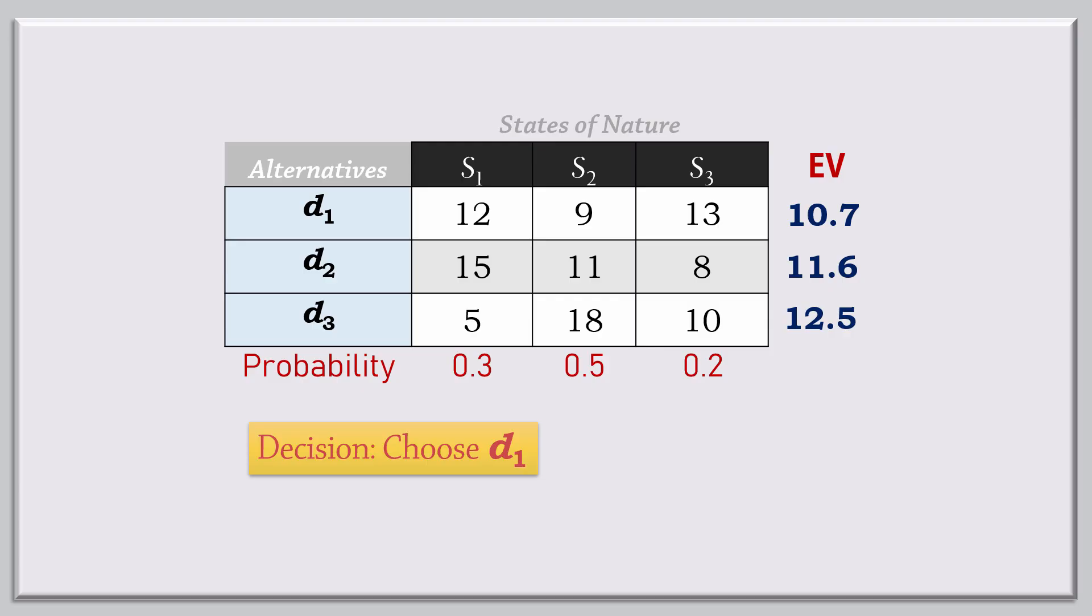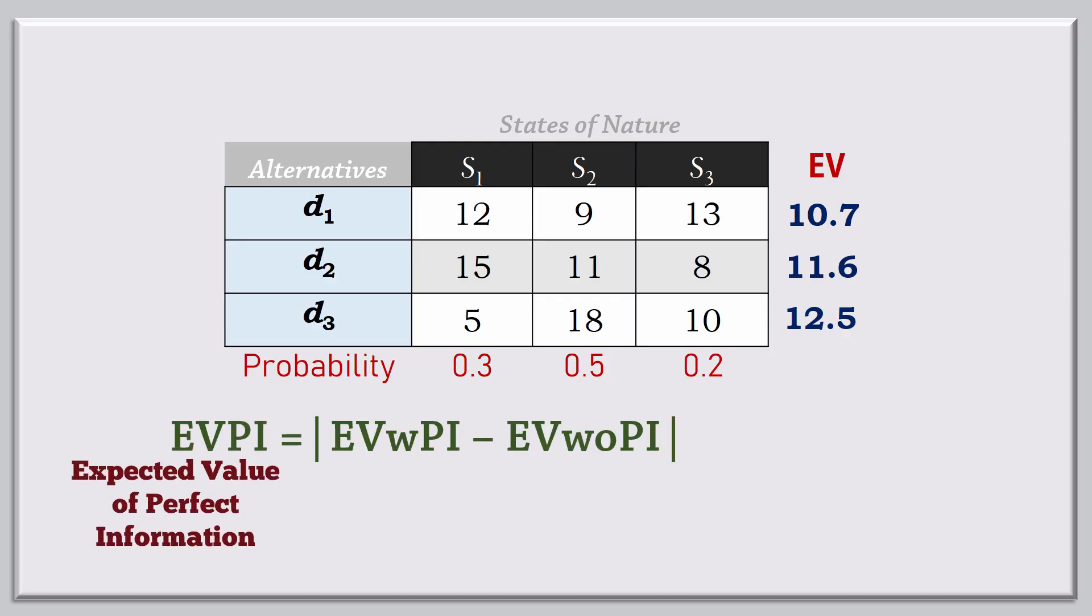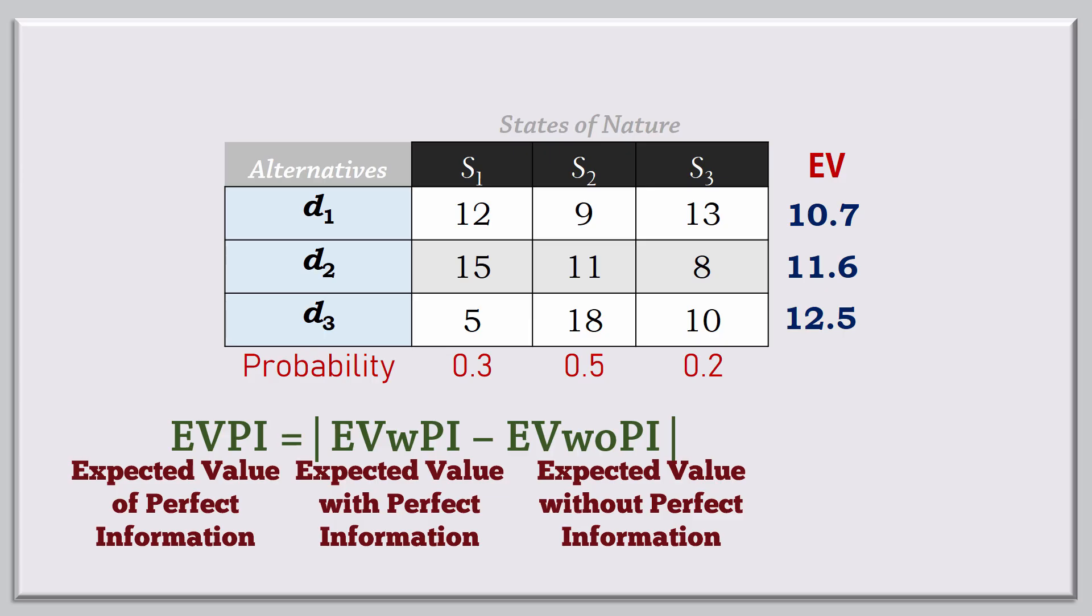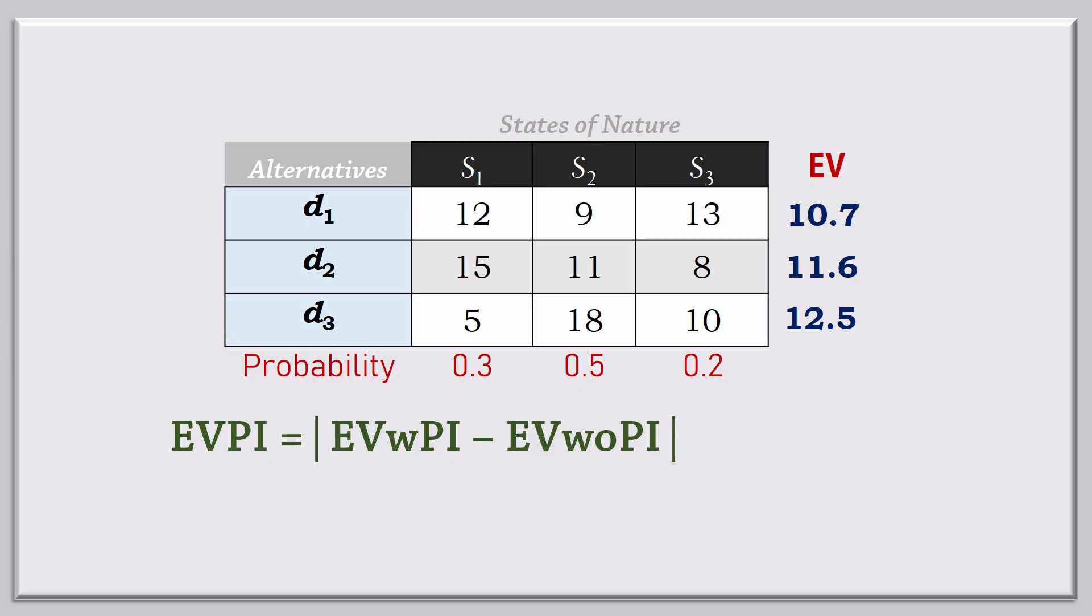Now, the expected value of perfect information is calculated as the absolute value of the difference between expected value with perfect information and the expected value without perfect information. That is, if we have perfect information about the states of nature, how much is that information really worth, on average?